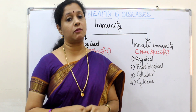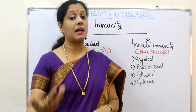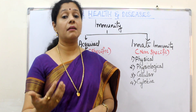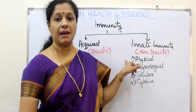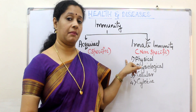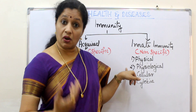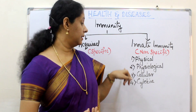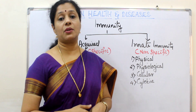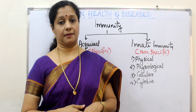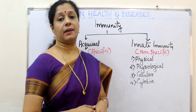So what are the types of innate immunity? There are four types of barriers our body has against infectious agents. First is physical barrier or anatomical barrier. Second, physiological barrier. Third, cellular barrier. And fourth, cytokine barrier. Let us see them one by one.